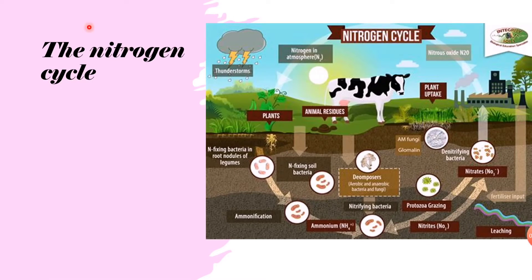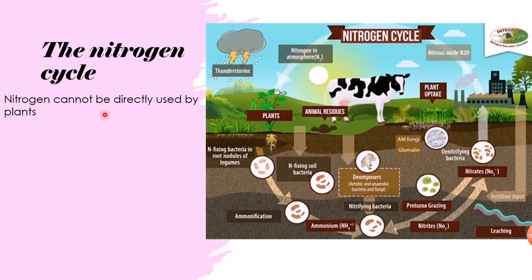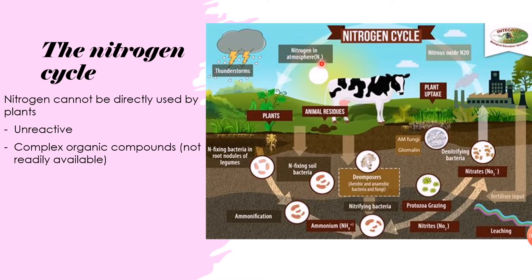Now looking at the nitrogen cycle, a massive and important part of nitrogen chemistry. Nitrogen cannot be directly used by plants, even though plants need it for amino acids to make proteins and for their DNA. This is because nitrogen is unreactive due to its triple covalent bond, and also because nitrogen is locked in complex organic compounds in the soil and is not freely available.